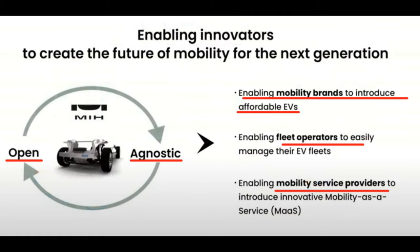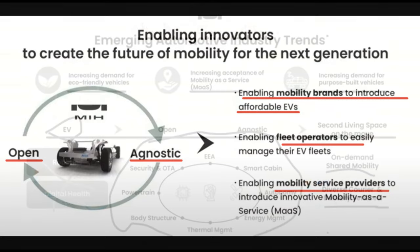This next section restates that. There's the MIH platform, which encapsulates a structural battery pack and castings. It's open and agnostic — open source, with all these companies providing components, all parts interchangeable. It's the PC and cell phone model, or the Qualcomm router model. The idea is enabling brands: this common platform produces affordable EVs, enables fleet operators to easily manage their EV fleets due to standardization, and enables mobility service providers to introduce innovative mobility as a service — producing low-demand models specific to market niches. This is the goal of MIH.